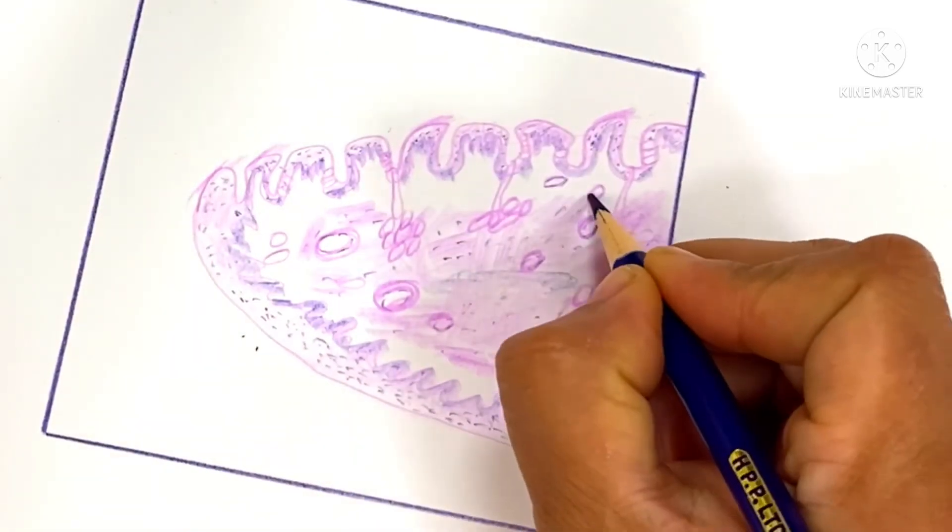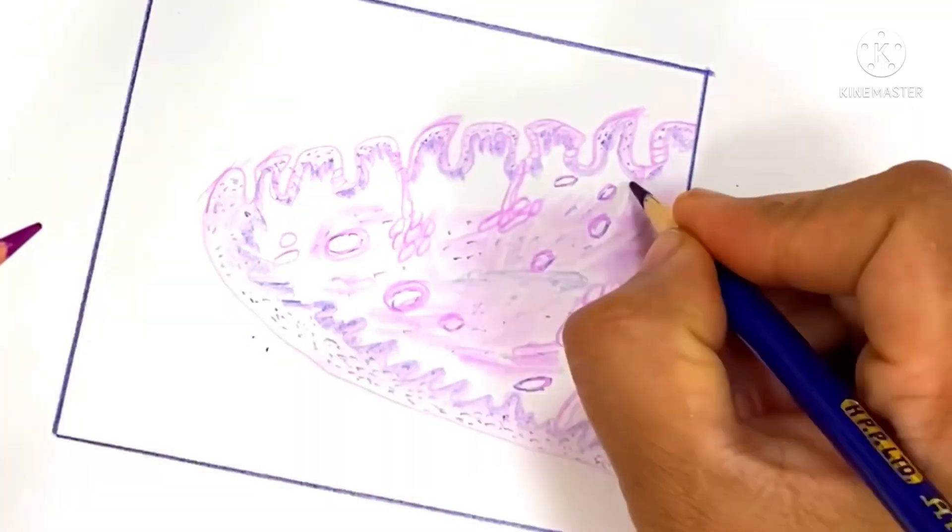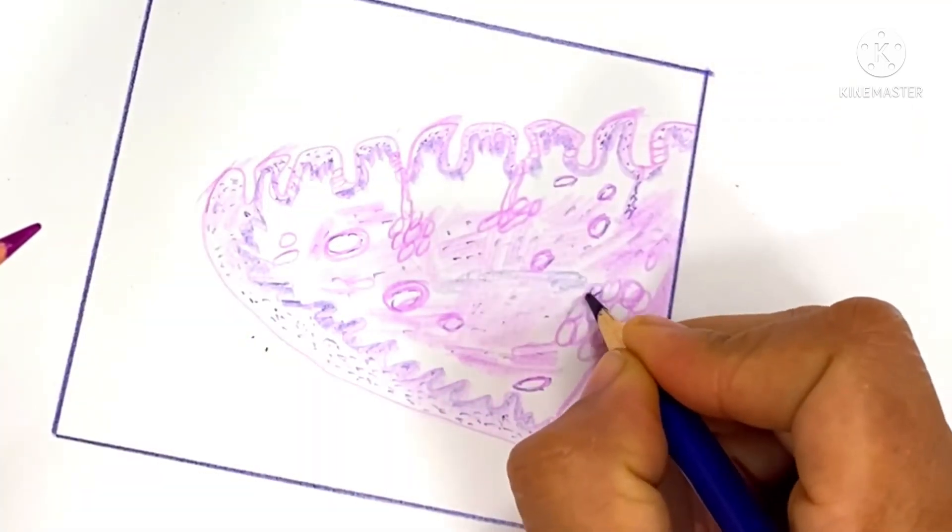The mucous membrane contains epithelium, lamina propria, papilla, and glands.